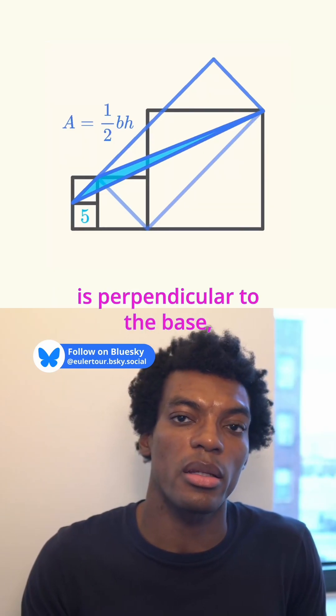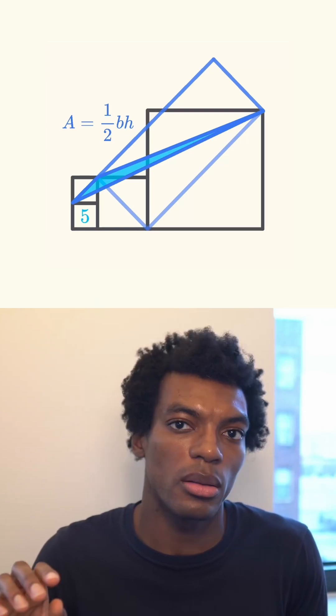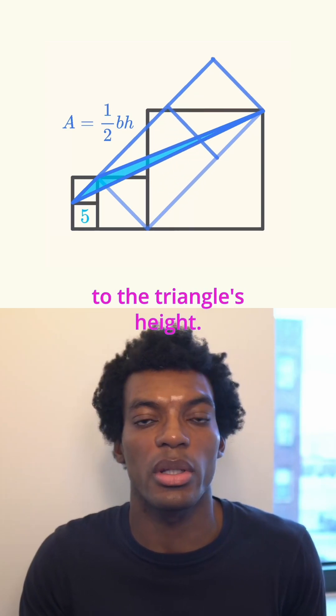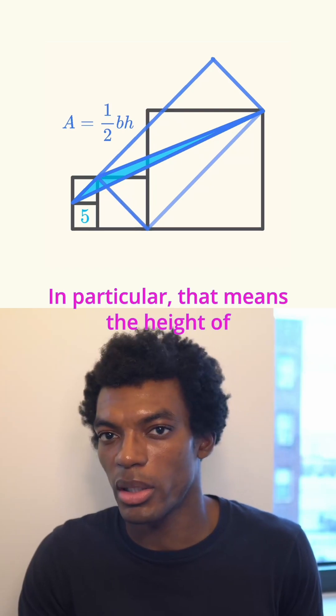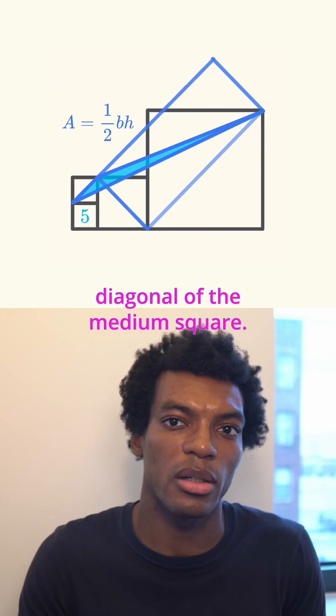Now as long as we make sure the height is perpendicular to the base, it doesn't matter where we start measuring it from. Any line on this track parallel to the base has a length equal to the triangle's height. In particular, that means the height of the triangle is equivalent to the diagonal of the medium square.